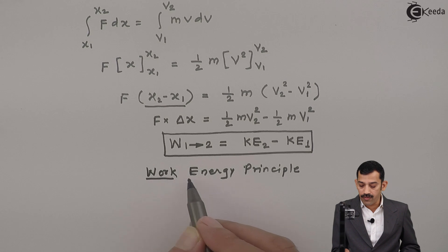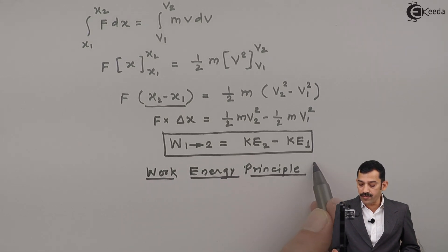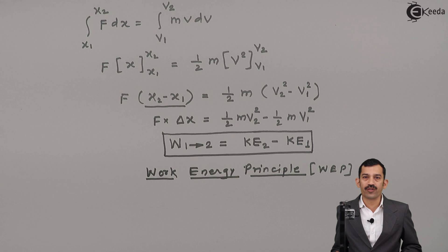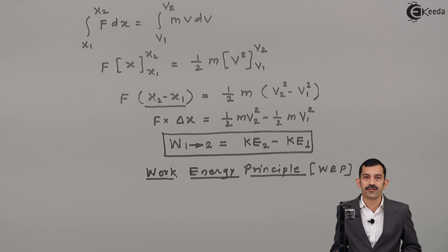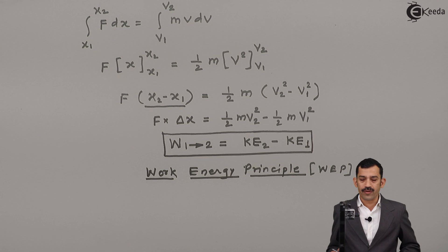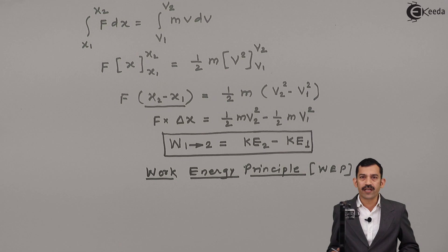The normal types of problems that can be solved using the work energy principle involve work done (force times displacement) and kinetic energy (half·m·v²). If displacement is known, we can find the velocity at the final position. Using this principle: work done by forces equals K2 minus K1, meaning work done by forces when body moves from 1 to 2 equals final kinetic energy minus initial kinetic energy — that is, work done equals change in kinetic energy.